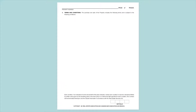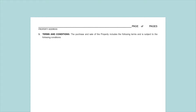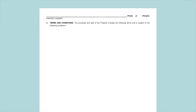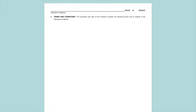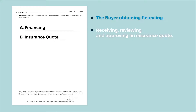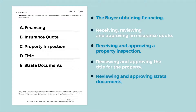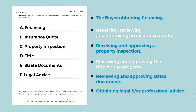Terms and conditions. Most transactions have unique terms and conditions that must be documented. Some conditions provide that they are for the benefit of one party and may need to be satisfied or waived in order for the transaction to complete. Examples of such conditions may include the buyer obtaining financing, reviewing and approving an insurance quote, a property inspection, reviewing and approving the title for the property, reviewing strata documents if applicable, and obtaining legal and/or professional advice.